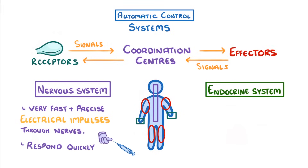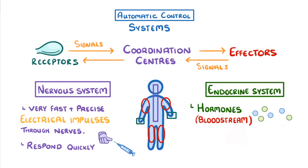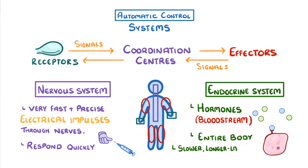The endocrine system, meanwhile, relies on hormones. These are small chemicals released into the bloodstream. And although they travel throughout the entire body, they only affect certain cells that have the right receptors. The thing to remember is that the endocrine system is generally slower, longer lasting, and more generalised than the nervous system.